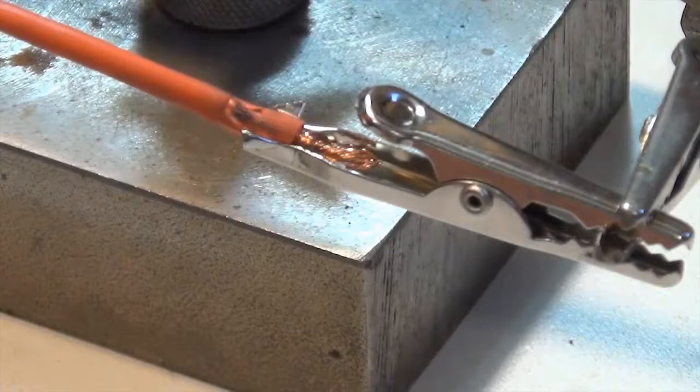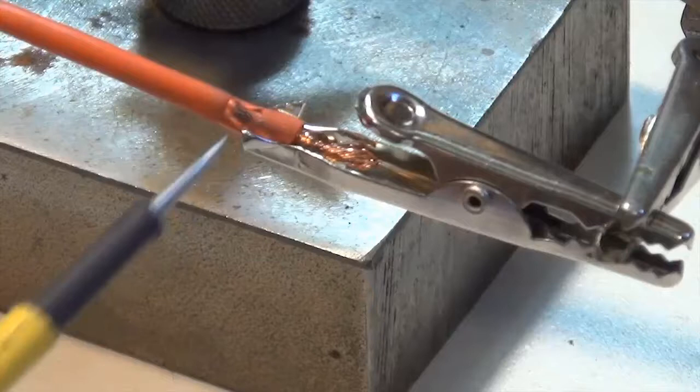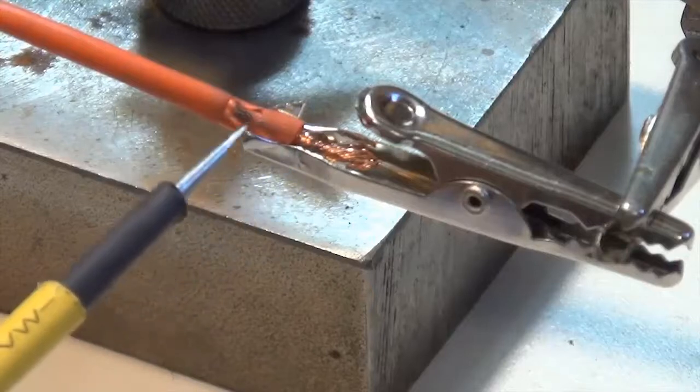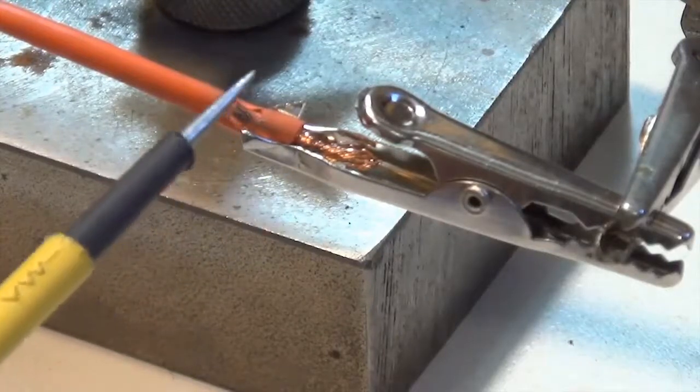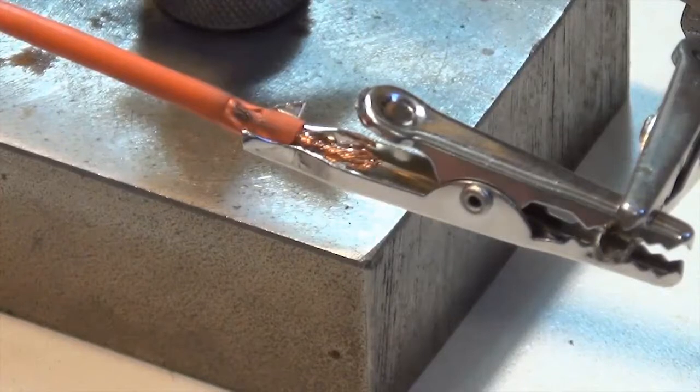Now let's get the stretched out wire back into the alligator clip, crimping the wire where it was initially crimped, leaving the copper part exposed inside the alligator clip for soldering.